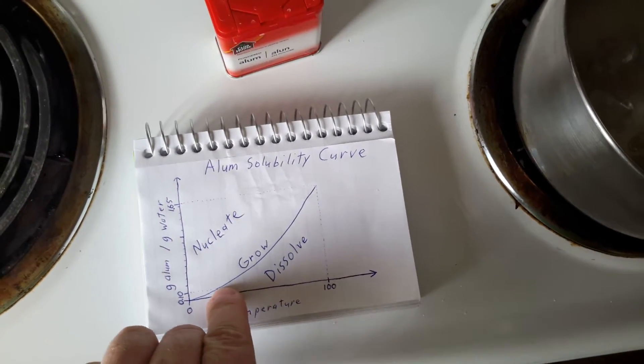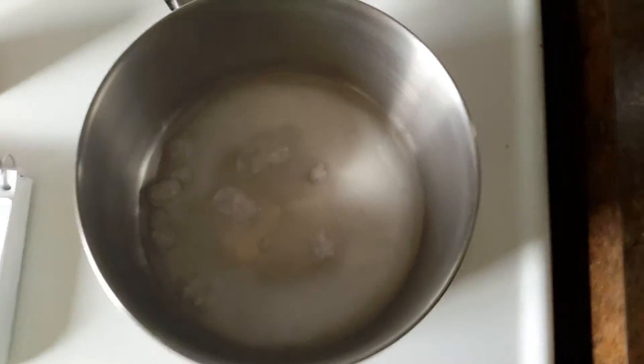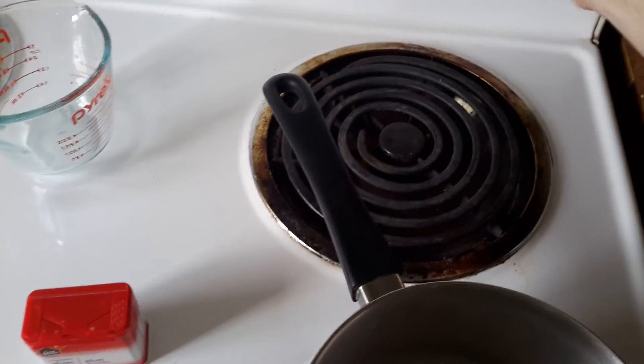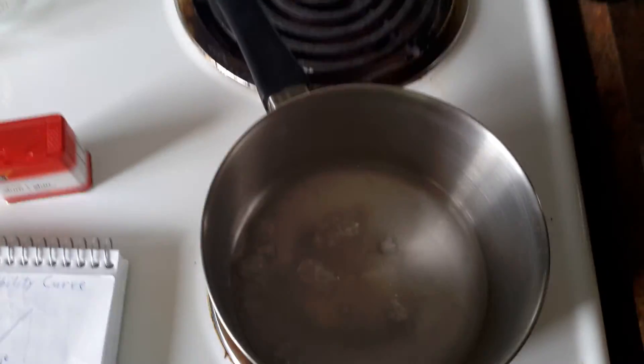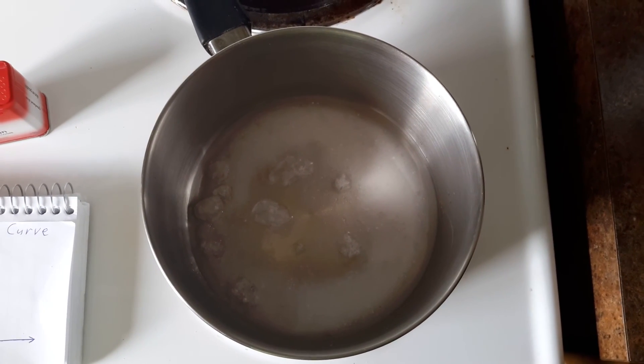So it'll only dissolve up to that line, and then no more alum is going to dissolve. So what I'm going to do is turn on the stove and get this water boiling, and I should be able to dissolve all that alum.